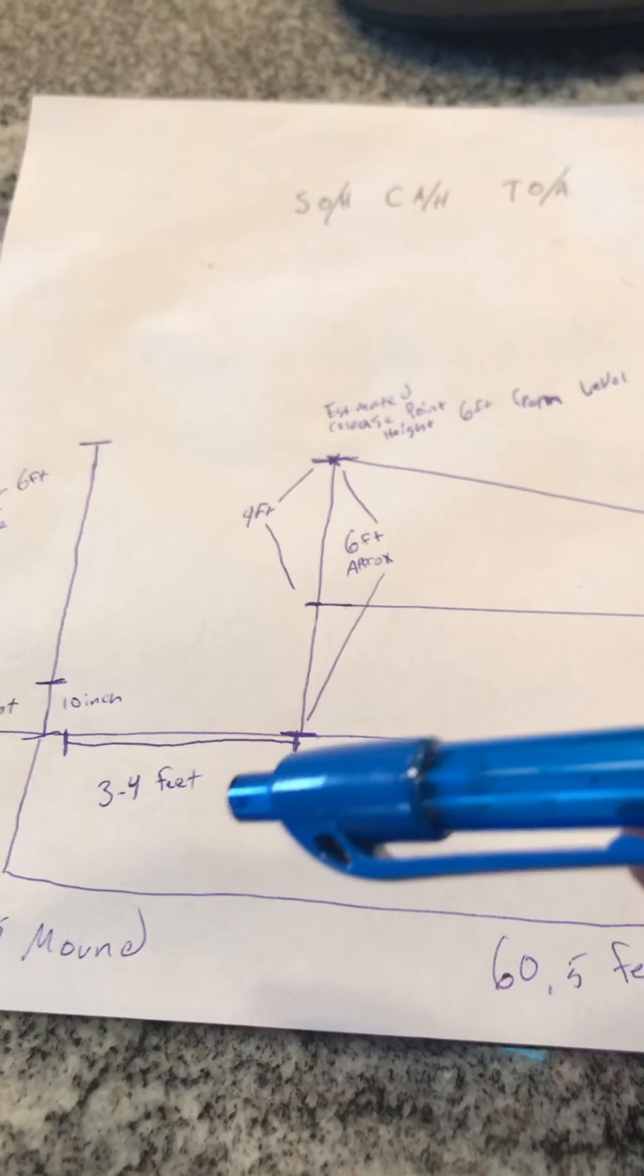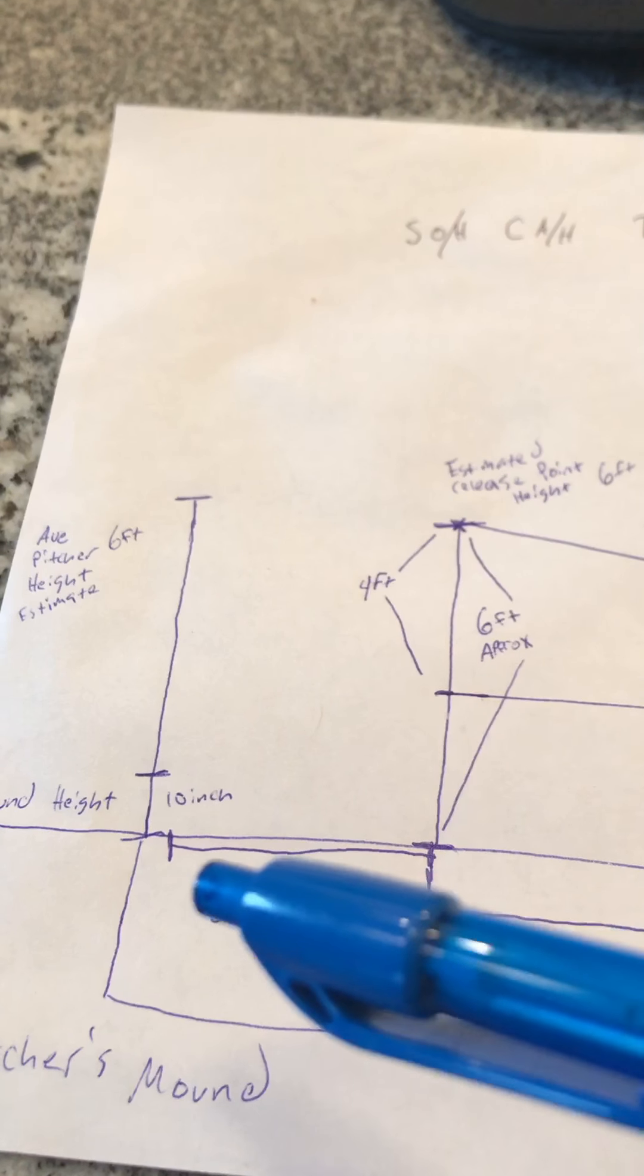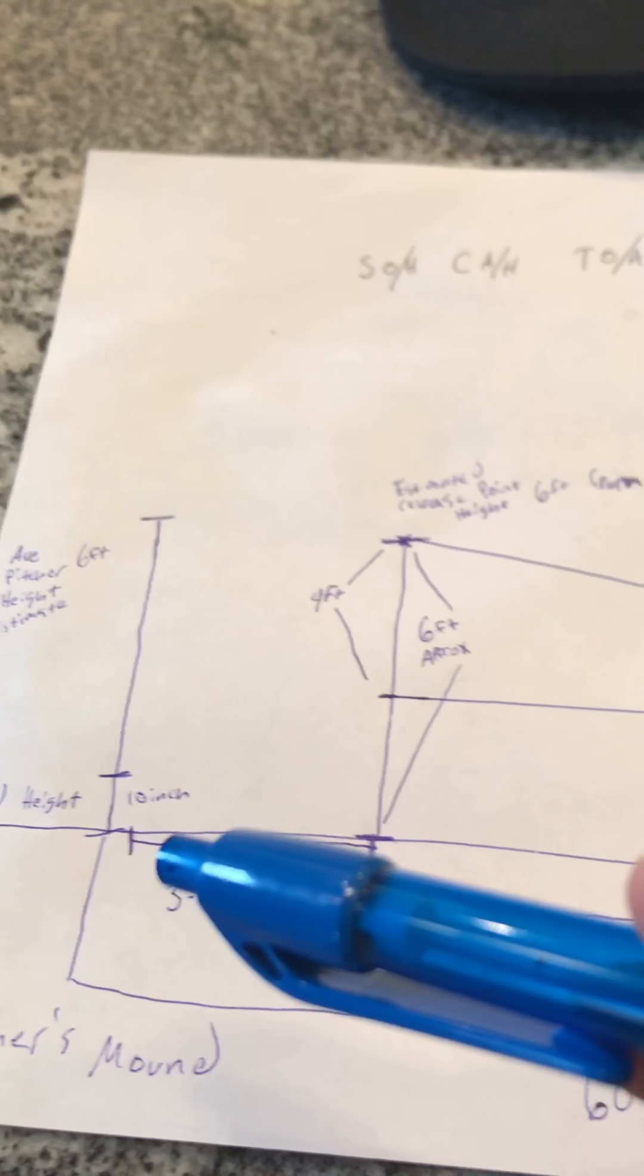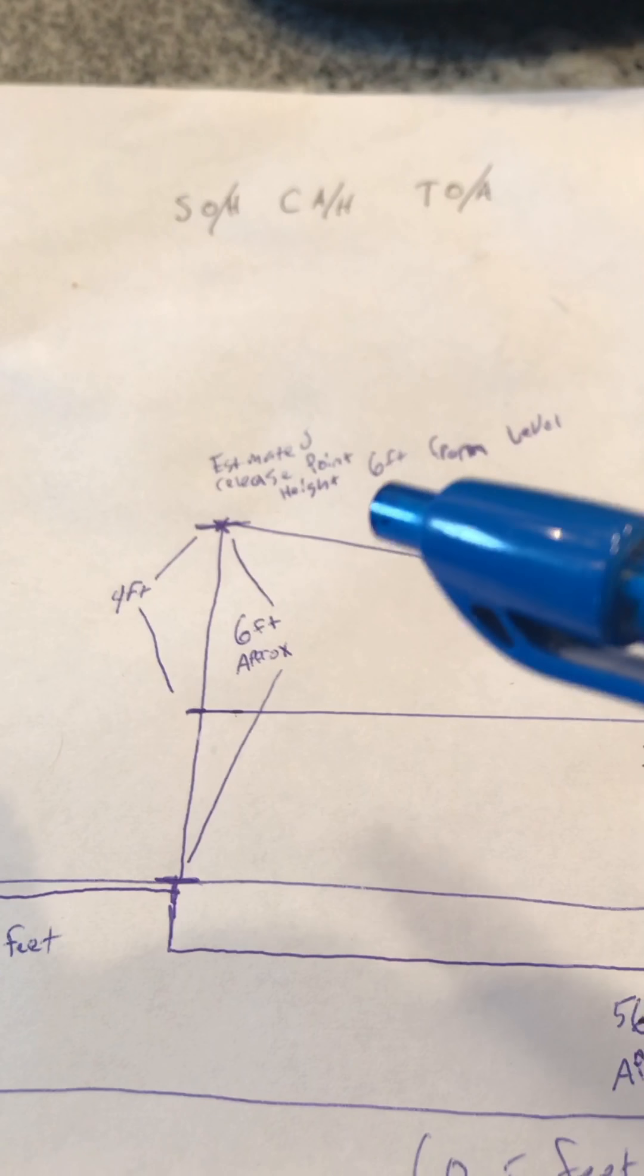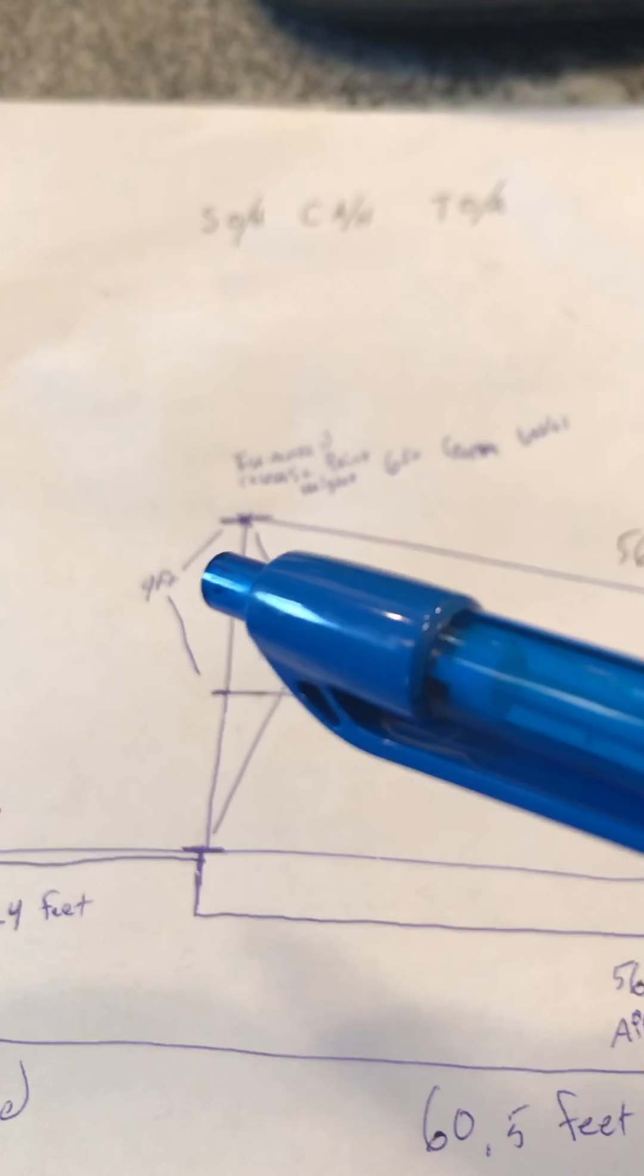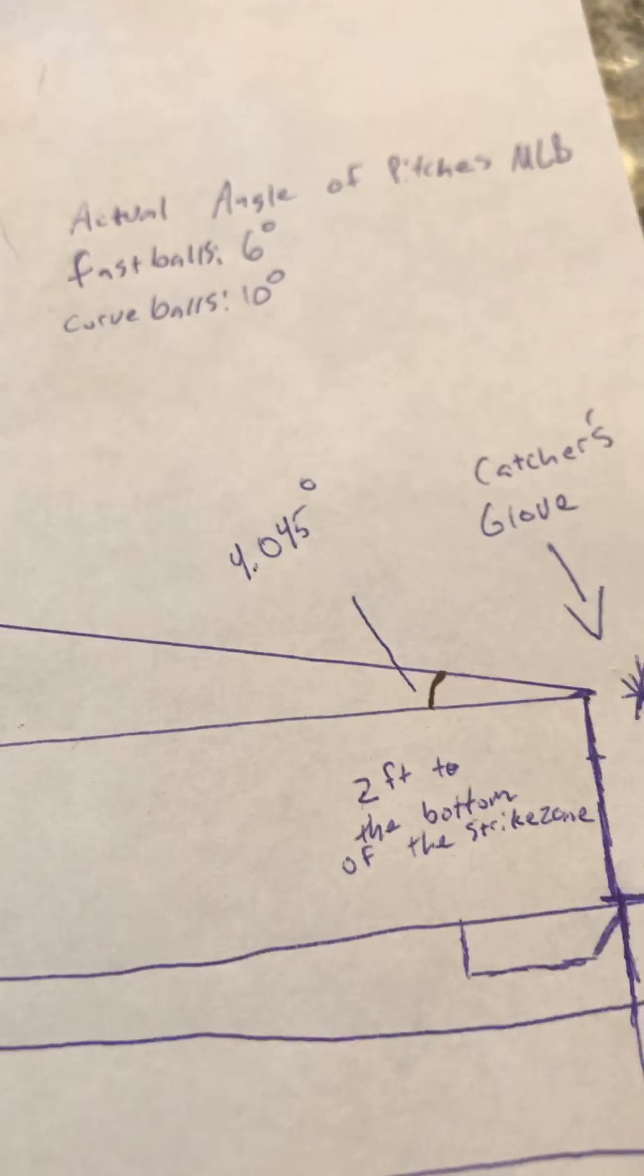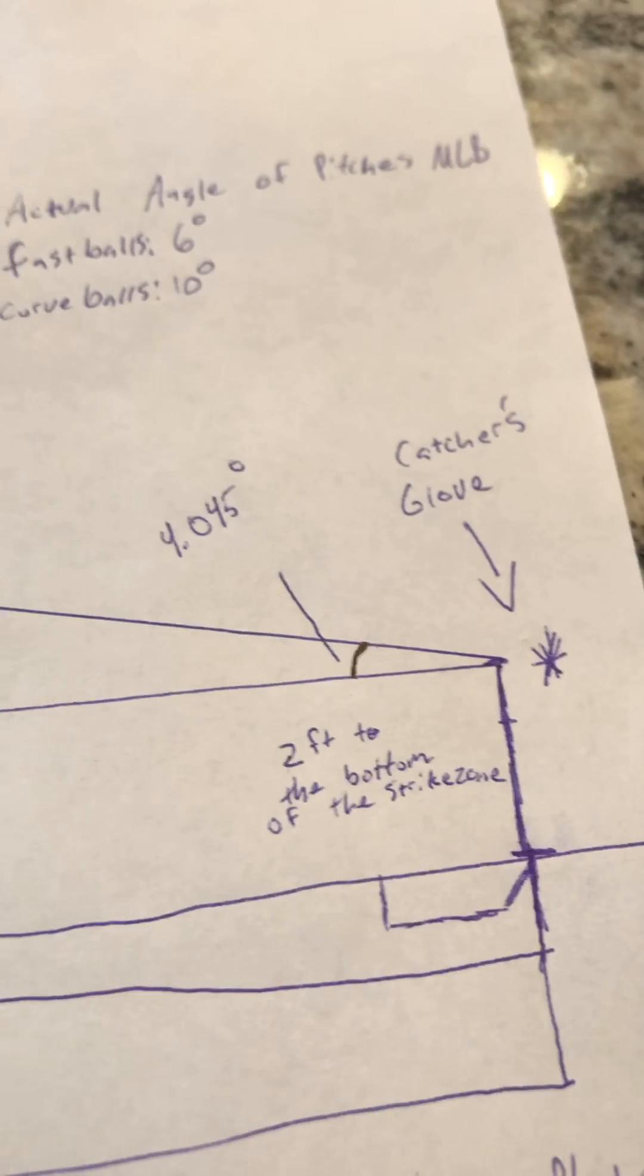Taller pitchers obviously can be further, this is also kind of a guesstimate. But if you're releasing the ball 3-4 feet from the mound, your release height, if you're about 6 feet, is going to be about 6 feet tall. Also an approximation, can vary per pitcher. The drop of the ball coming into the plate is about 4 feet because the bottom of the strike zone is about 2 feet from the ground. And the destination of a good pitch is the catcher's glove.